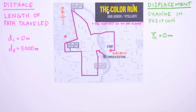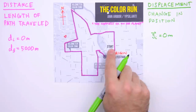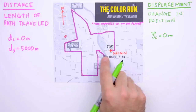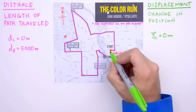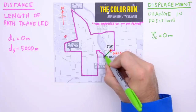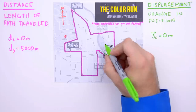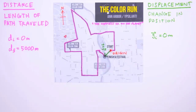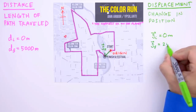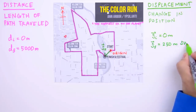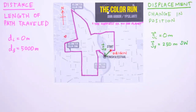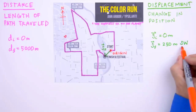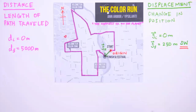How about our runner's final displacement? The final change in position of our runner relative to the origin would be the length of a straight line drawn from the origin to our runner's final position — the finish line. We'll draw an arrow from the origin to the final position to represent final displacement, S sub f. The length of this displacement is about a quarter kilometer, so S sub f equals 250 meters southwest. This last part — the direction — is a critical difference between distance and displacement.